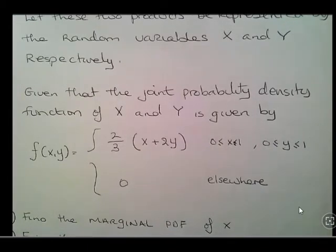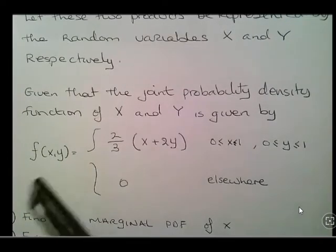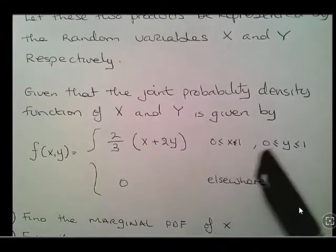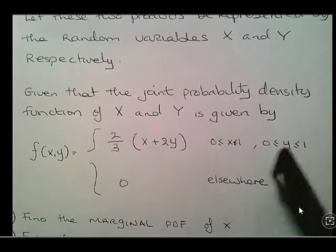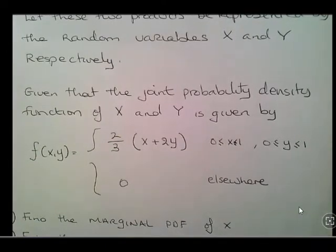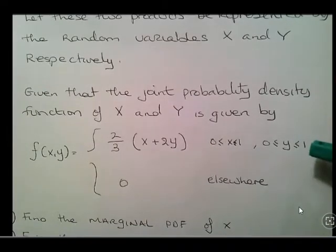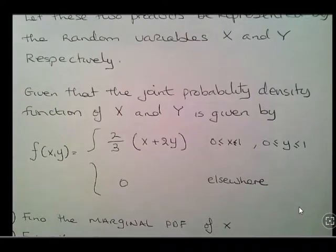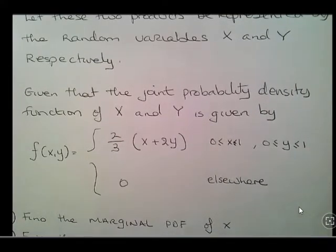It's denoted f of x and y, and it's piecewise: two thirds of x plus y, where x is between 0 and 1 and y is between 0 and 1 inclusive, and 0 elsewhere. That is important because it will simplify a lot of the definite integral calculations we're going to do later on. When we integrate 0, we just get 0, so you can ignore the region where it's 0.